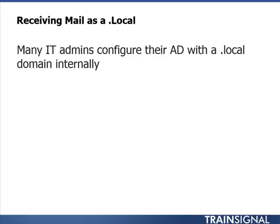Many IT admins configure their Active Directory boundary with a .local domain internally, with the understanding that they're configuring a security boundary by making a separation between a .local internal domain and a .com domain registered out on the internet. When you do this, Exchange during installation picks up on the Active Directory domain, creates an accepted domain, creates an email address policy — grabbing all of that information to pre-configure the Exchange environment before an administrator even touches the Exchange Admin Center. That works fine if your Active Directory is already a .com or .net, but with a .local, you'll have to make manual configuration changes.